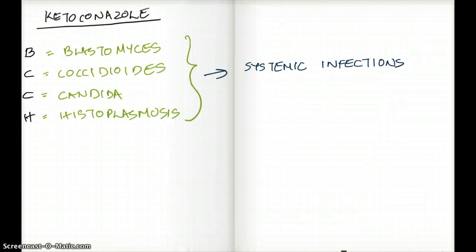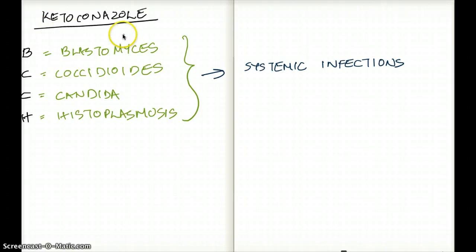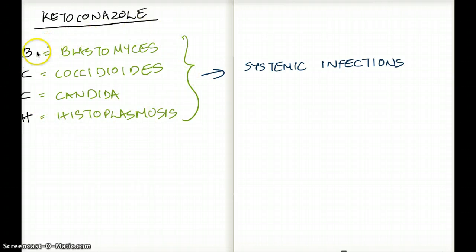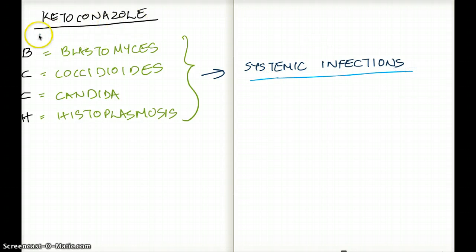What about ketoconazole? You can remember ketoconazole by B, C, C, H — B for blastomycosis, C for coccidioides, C for candida, and H for histoplasmosis. These are fungi that often cause systemic infections, and for systemic infections we use ketoconazole.